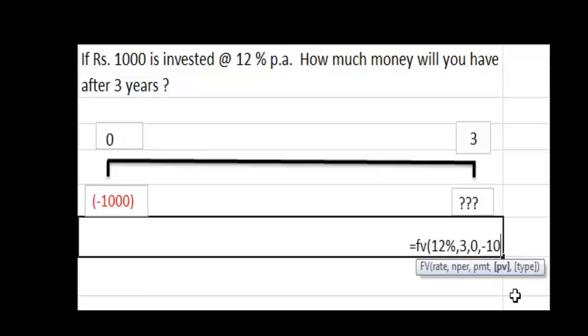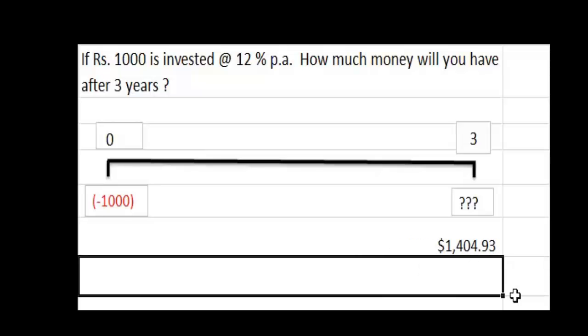That's minus 1000. Type makes sense only with a PMT. Without PMT, type is sort of irrelevant so let's leave it out and click enter. This is your answer. So your thousand rupees invested at 12% per annum after three years will become one thousand four hundred and four point nine three, or approximately one thousand four hundred and five.